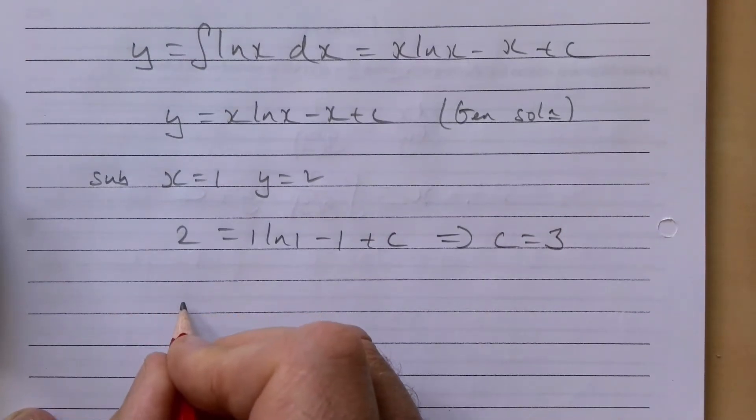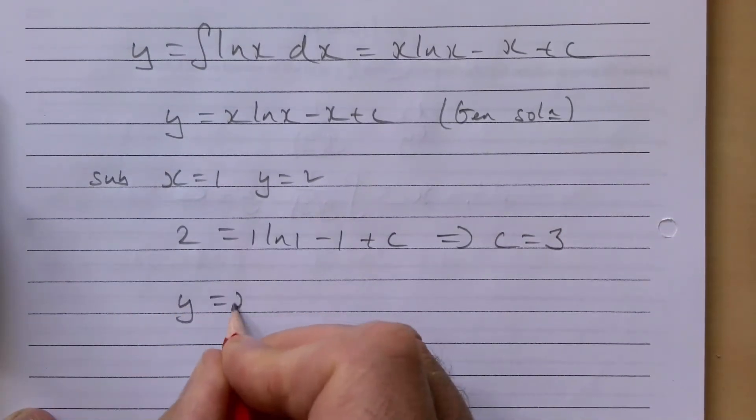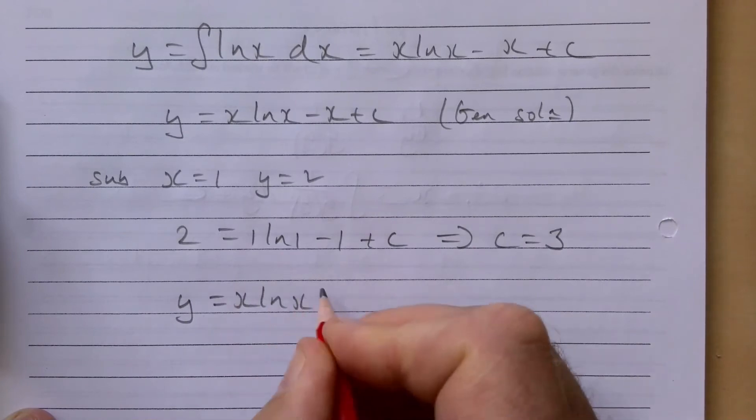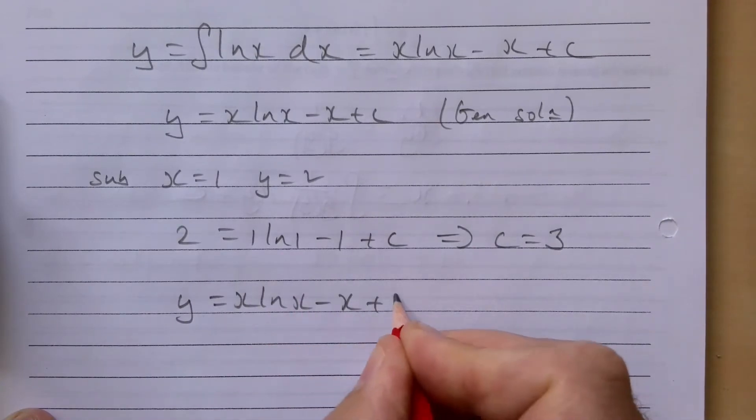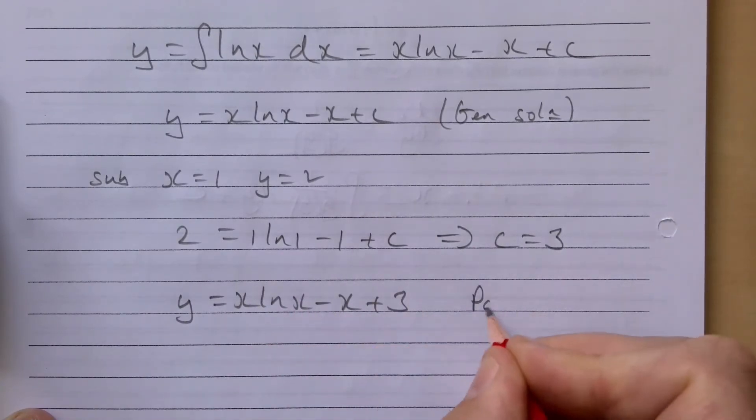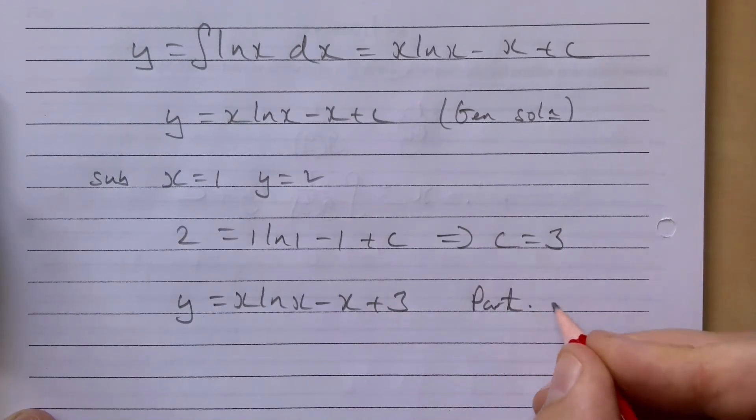Our particular solution in this case is y = x·ln(x) - x + 3. This is our particular solution.